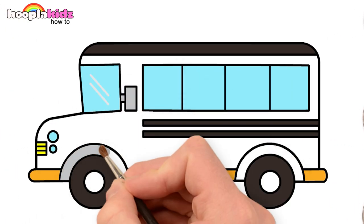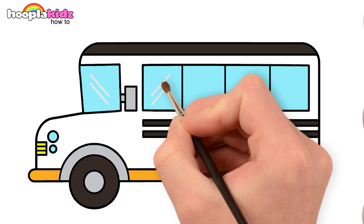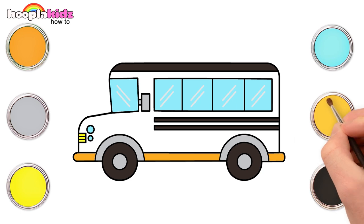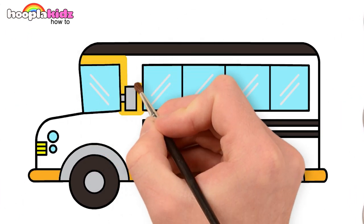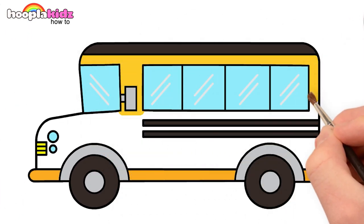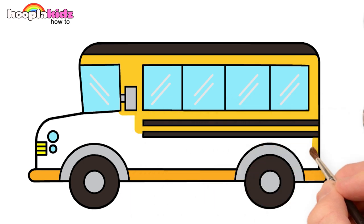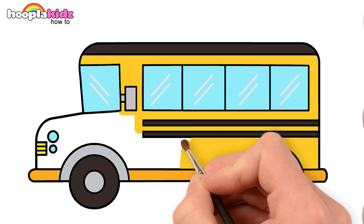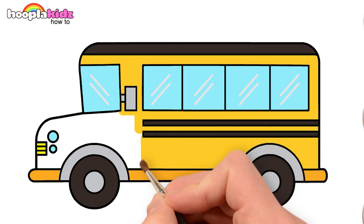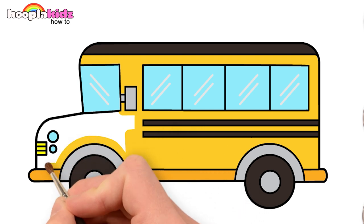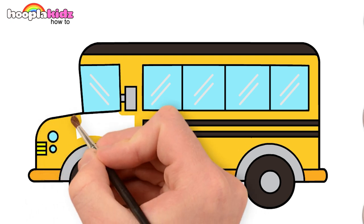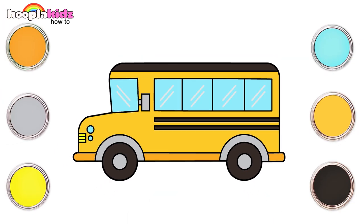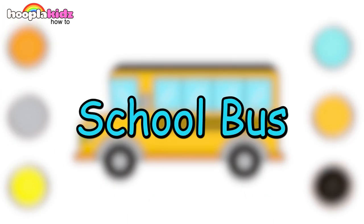We will use grey for the outline of the wheels and lines on the window. Finally, we color the body of the bus yellow. A bus is ready for you to go to school. Are you ready too?